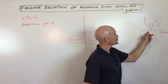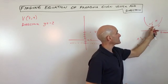It's a u-shaped graph. There's a directrix, a focus, and a vertex.